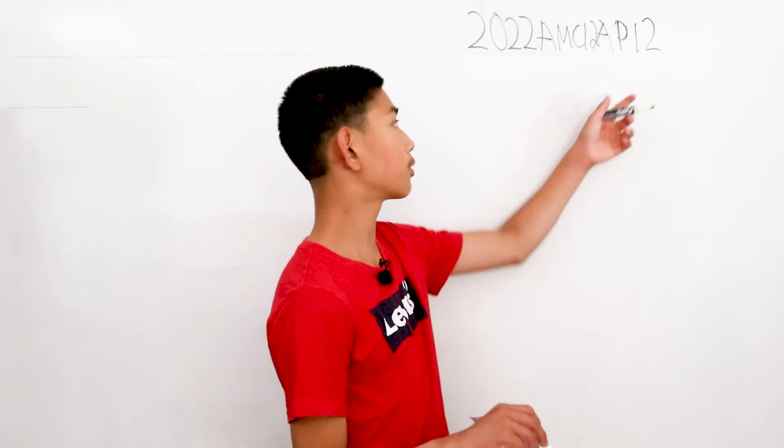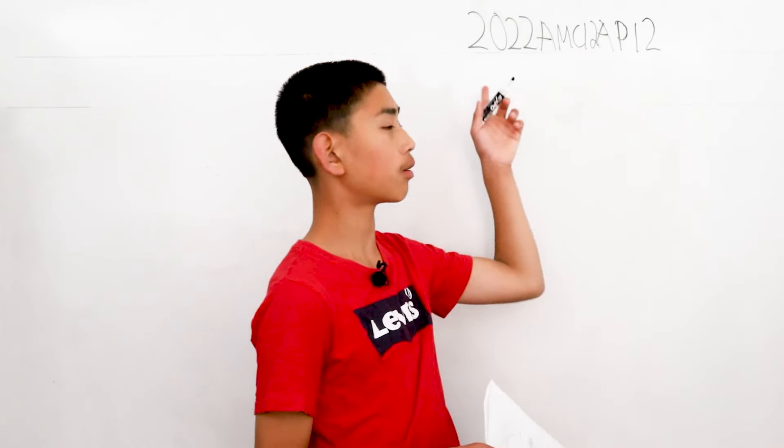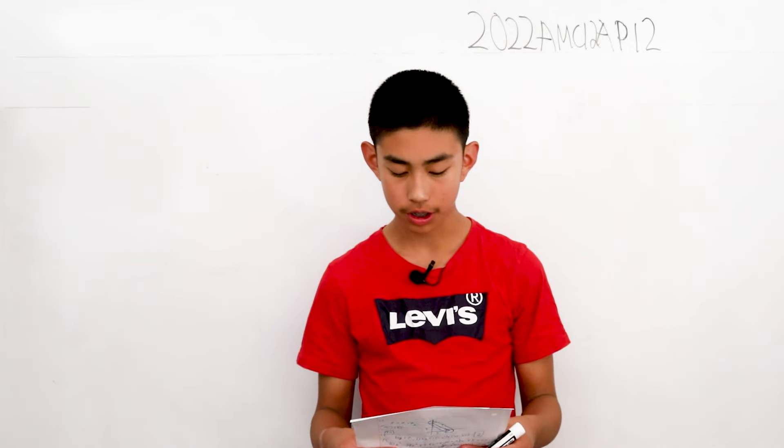We're solving problem 12 from the AMC 12A from 2022. Let M be the midpoint of AB in regular tetrahedron ABCD. What is cosine of angle CMD?